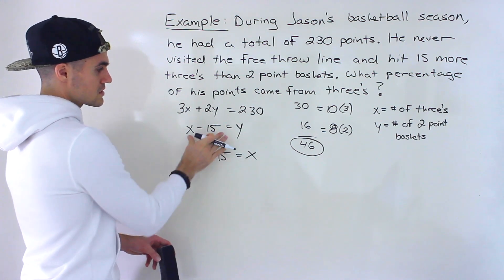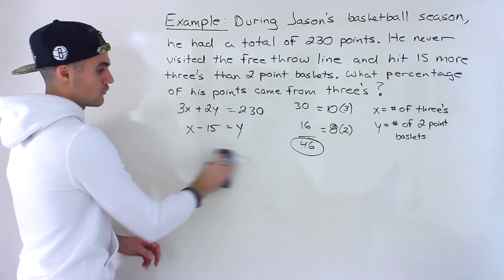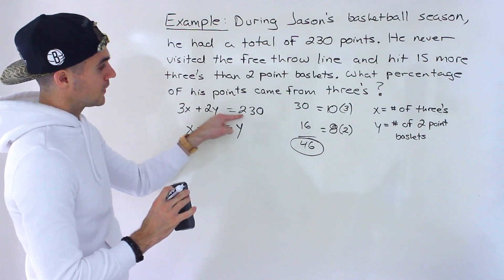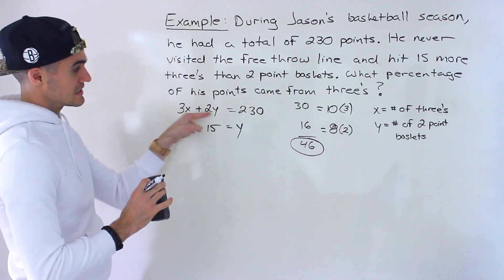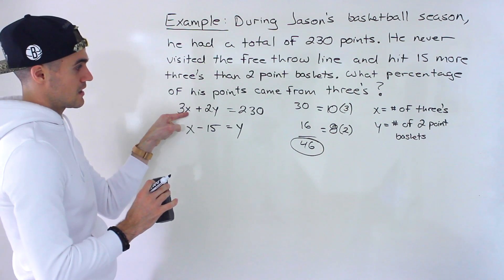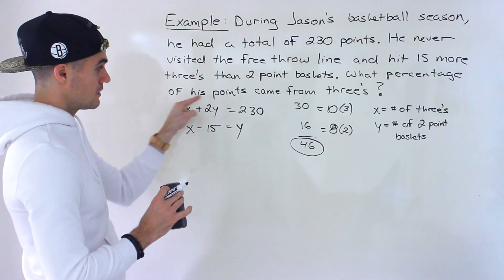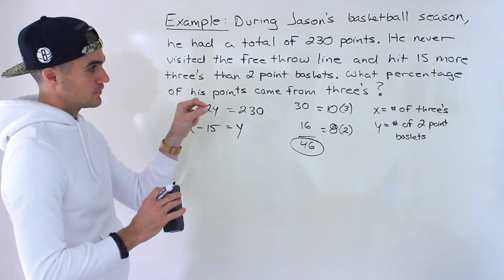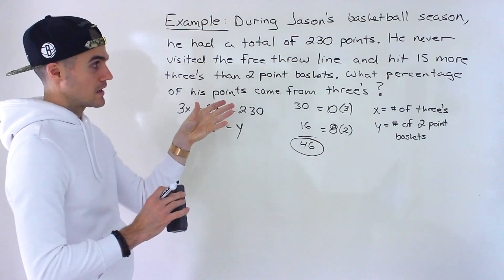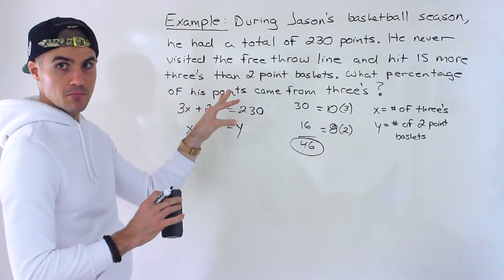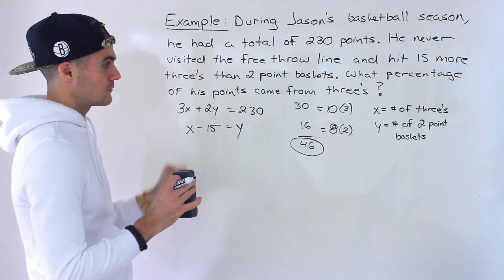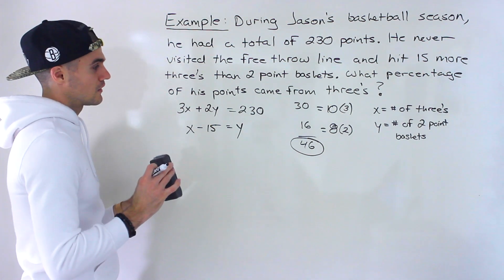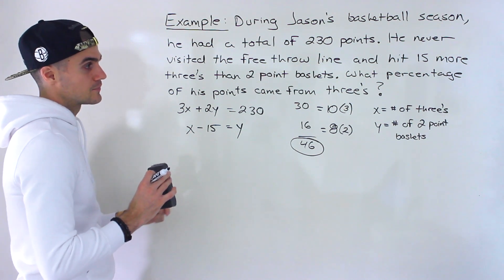So you've got to be careful with a question like this, seeing when they're talking about points. Then you've got to make sure this left side is in terms of points. If you have points, this has to be in terms of points. And then when they're talking about the actual quantity of shots made, it doesn't necessarily have to be basketball, it could be any kind of game. And this is a popular kind of problem. So just make sure you're reading these very carefully when you're creating these equations.